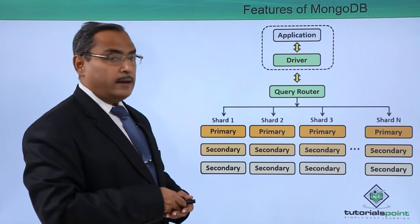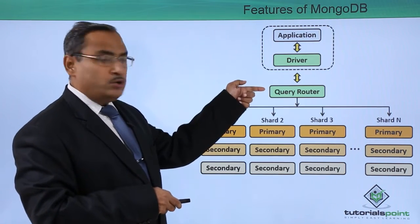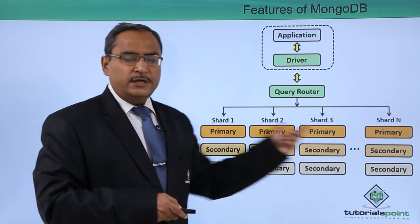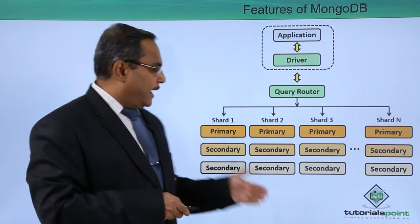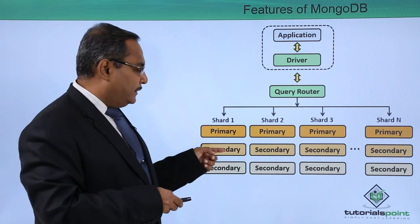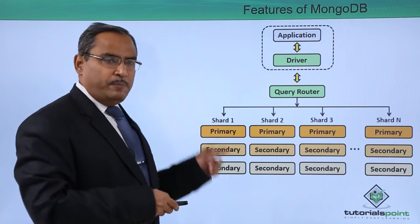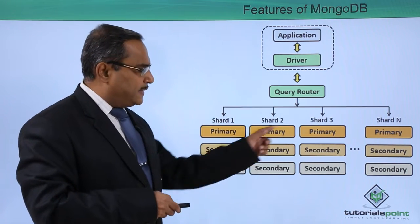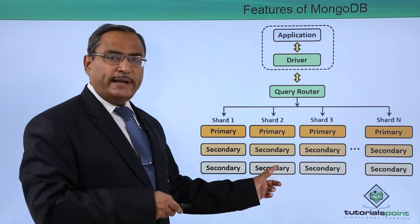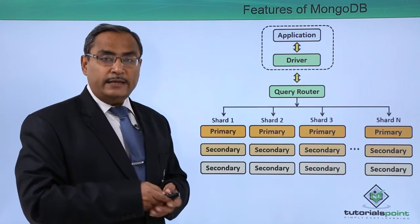Looking at the sharding diagram: we have an application running, then a driver, then a query router, and the database is divided into multiple shards — shard 1, 2, 3, and so on — each with multiple nodes. One node is the primary node and the others are secondary nodes. Whatever data the primary node has gets replicated onto the secondary nodes. Whenever data is not available from the primary node for some reason, it is made available from the secondary nodes, which is why MongoDB has high availability.